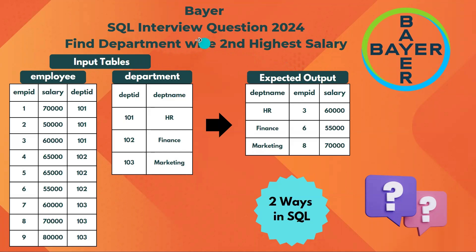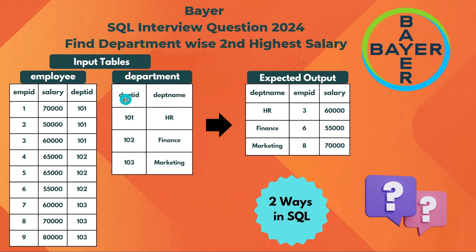Hello everyone, welcome back. In this video I will be covering one of the SQL interview questions recently given as an employee and department table. We need to find out the department-wise second highest salary along with the employee ID. We have an employee table with employee ID, salary, department, and a separate department table with department ID and department name. We need to join these two tables based on department ID.